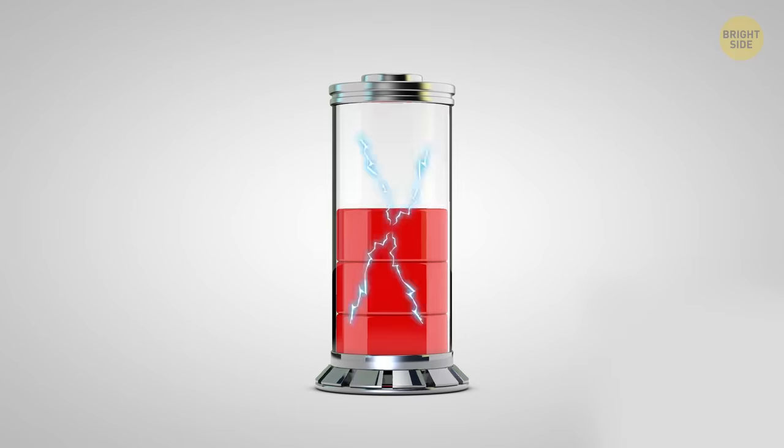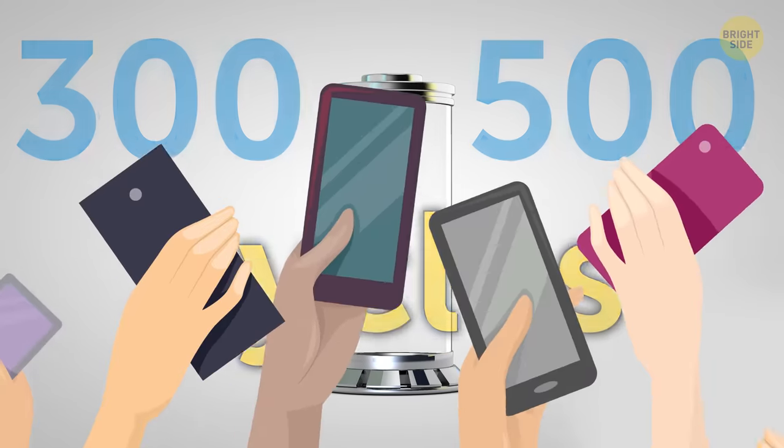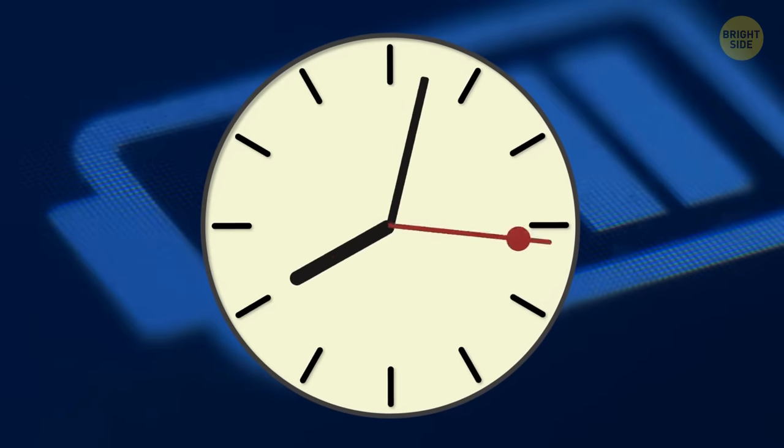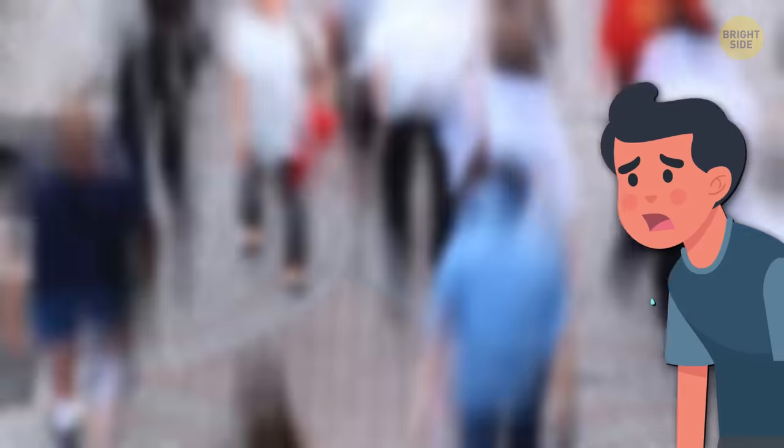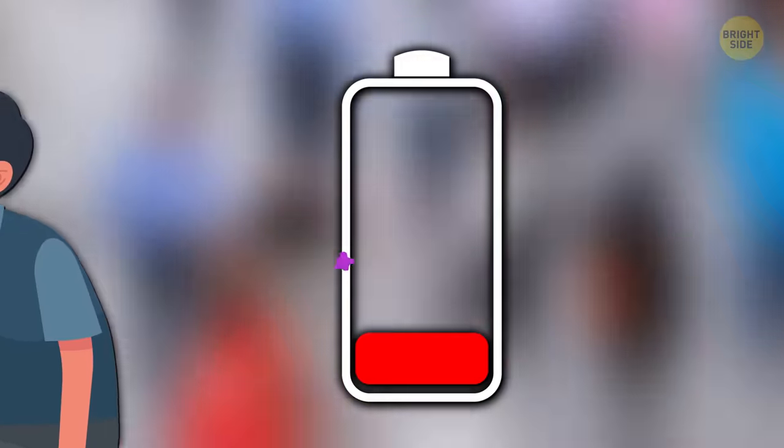Modern batteries are designed to empty between 300 and 500 recharge cycles, depending on the model. Keeping your device charged will extend those 500 cycles over a longer period. It will also reduce the wear and tear that gradually weakens the battery's ability to hold a charge.